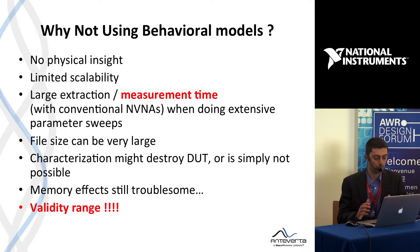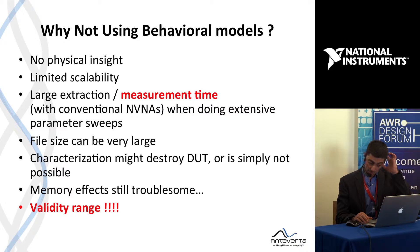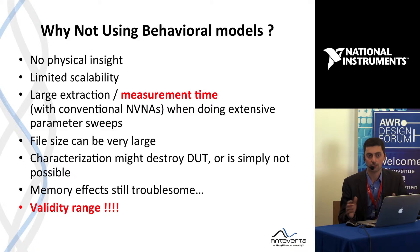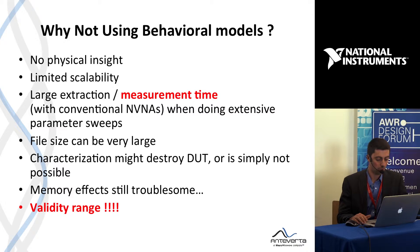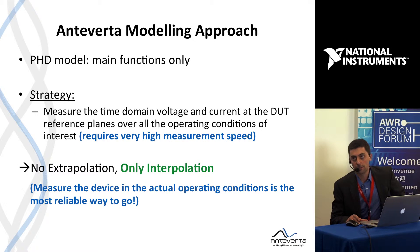It is extremely dangerous in my opinion to extrapolate with this type of model. Our advice is: if I don't measure it, I don't believe it. For the model to be accurate, it's very important to measure in the conditions that the transistor is going to operate. This gives a problem in terms of measurement time — a minor issue nowadays — but the file size can be very large, and it's not always possible to characterize DUTs in every possible condition. Memory effects can still be troublesome to model, and validity range is basically a compromise between range and measurement time.